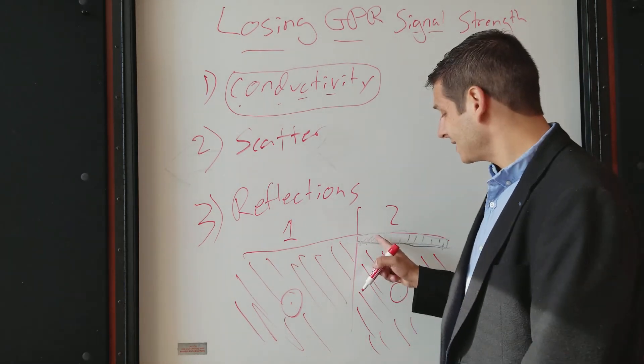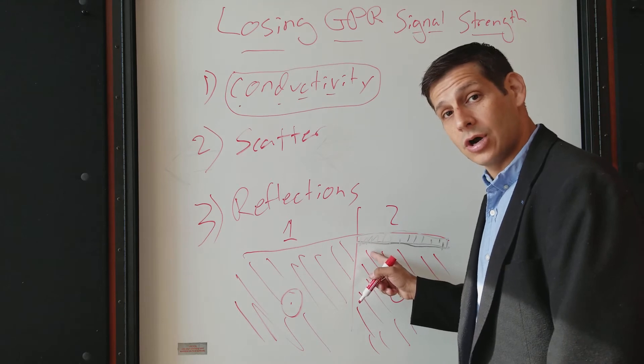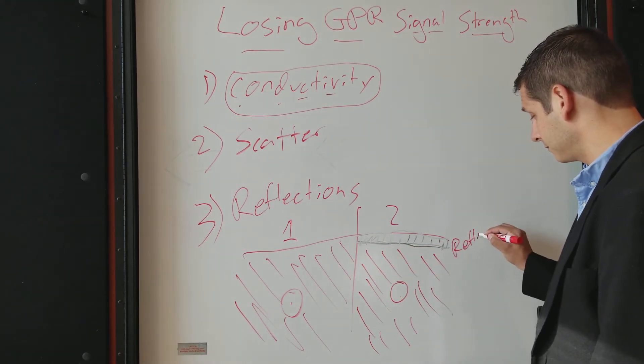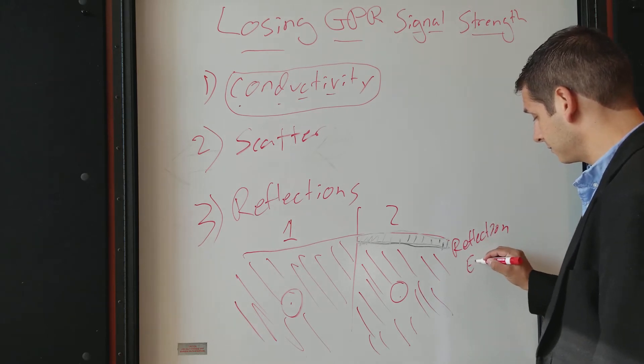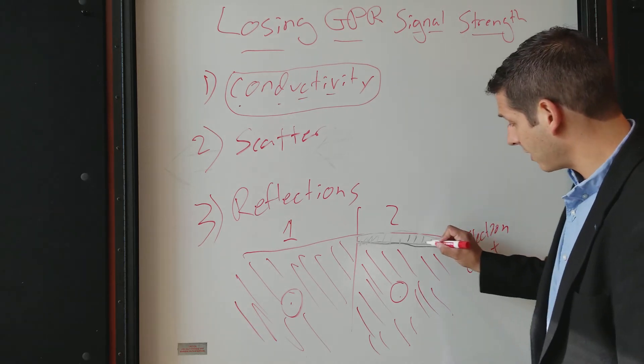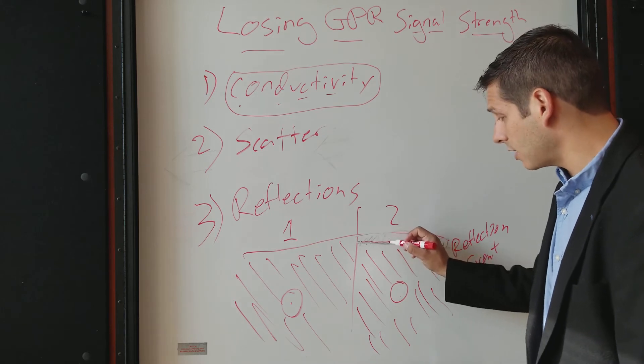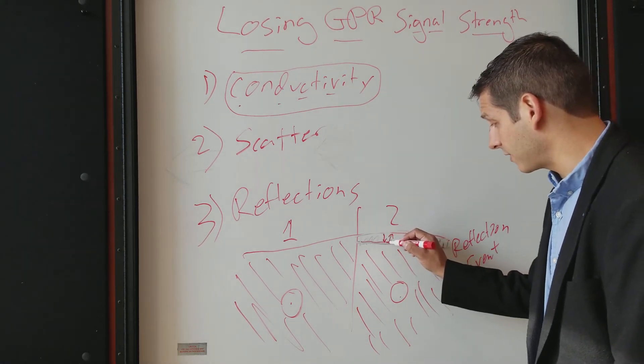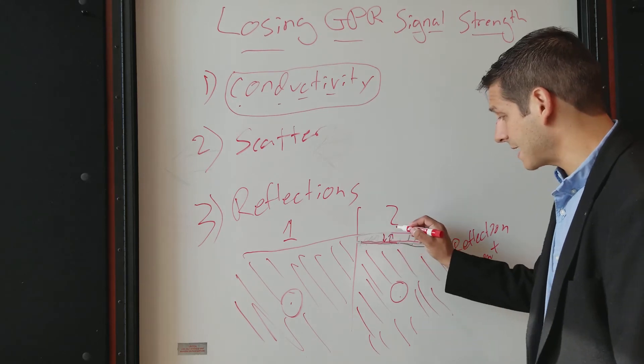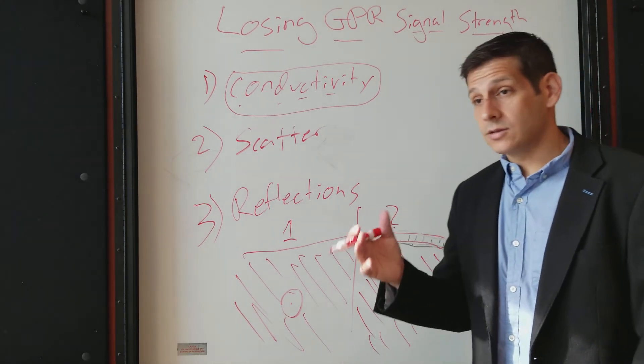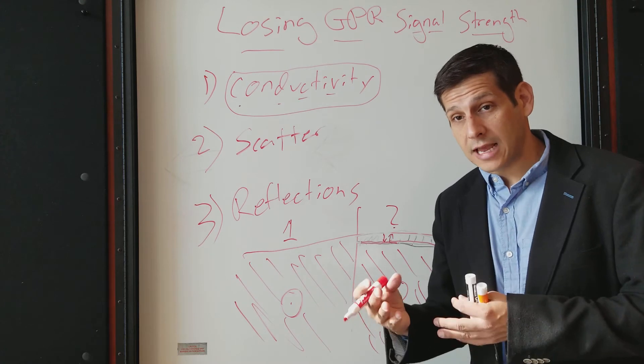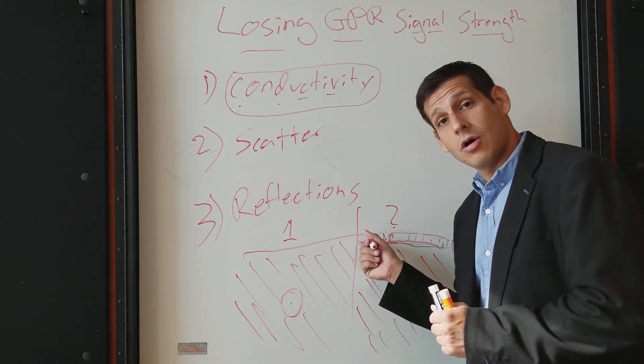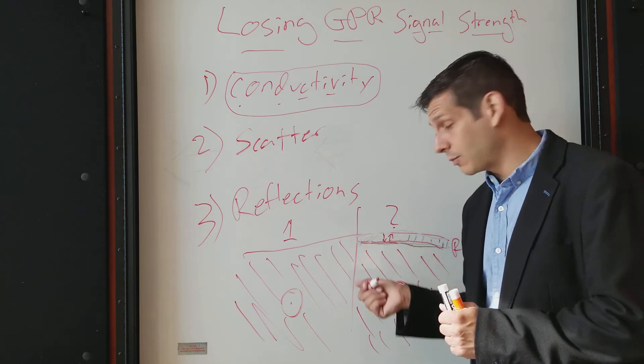because the asphalt to clay interface is going to cause a major reflection event right here that's going to cause a lot of the signal to come back to the ground surface. It comes down and it reflects off of this interface, comes back to the ground surface. And depending on how concentrated, how saturated your clay is, that could be close to half your signal. Almost half your signal could be reflected back.